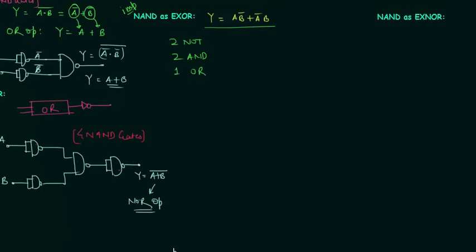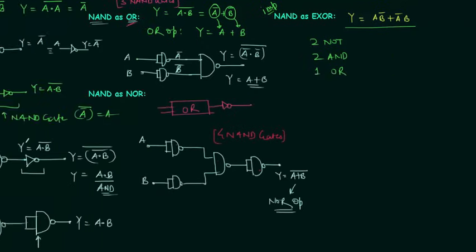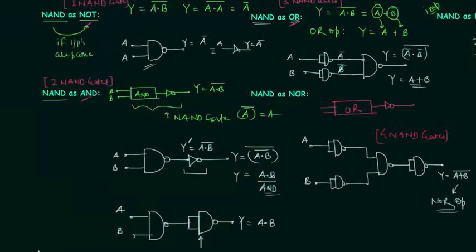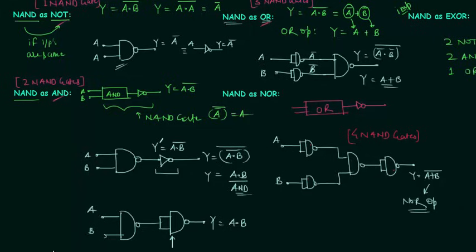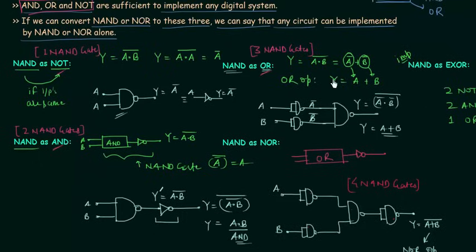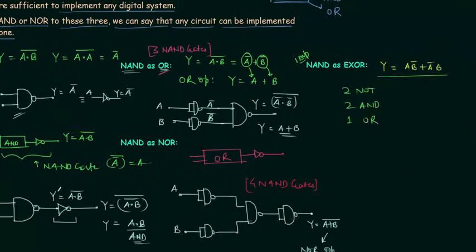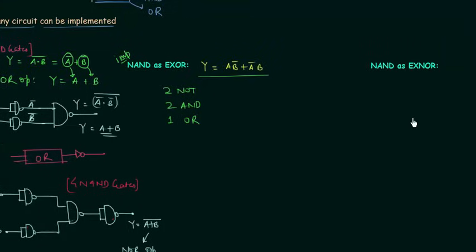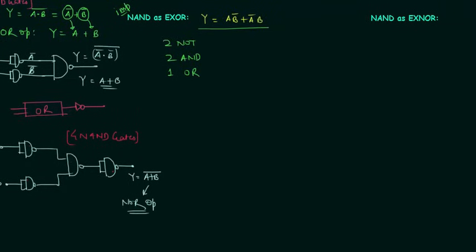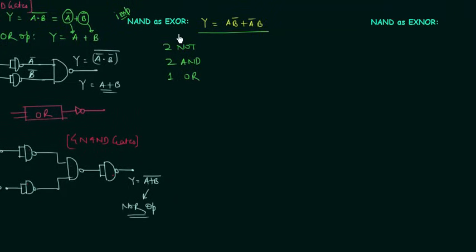As already explained, in the case of a NOT gate we require one NAND gate, in the case of an AND gate we require two NAND gates, and in the case of an OR gate we need three NAND gates. So let's calculate how many NAND gates we require to implement the XOR gate.